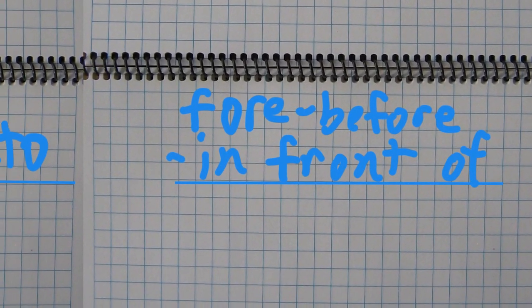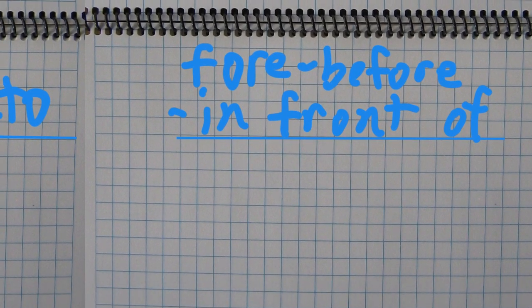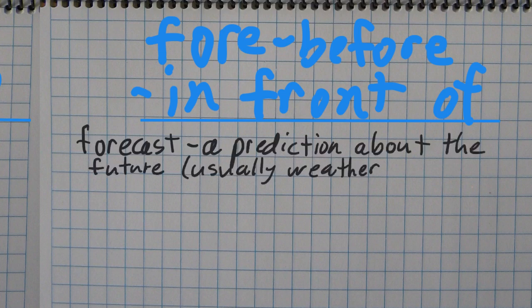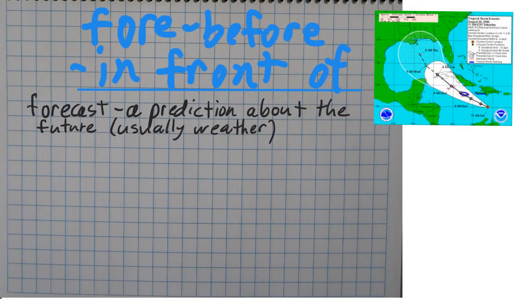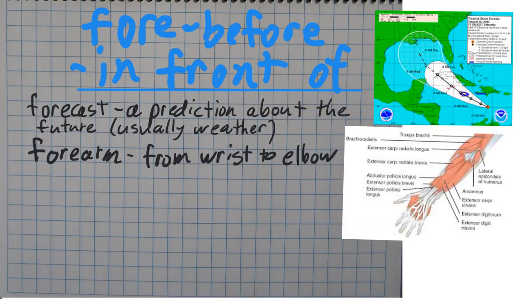Let's look at fore now. A forecast is a prediction about the future. Usually it's for the weather, though. For example, there's a forecast of a storm coming into the Caribbean. Your forearm is a part of your arm from the wrist to the elbow. So this here is your forearm. Foresee, very similar to forecast, means to predict.